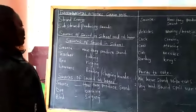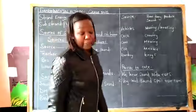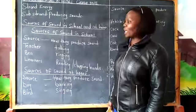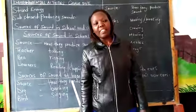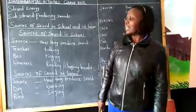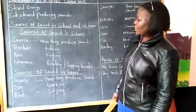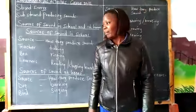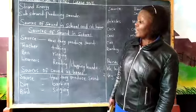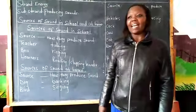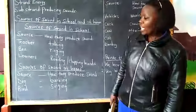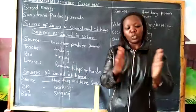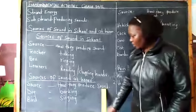In our school we have so many sources of sound. The first one is a teacher — when the teacher is talking and teaching, that is producing sound. We also have a bell; when the bell is ringing, it produces sound. Even when the learners are reading, they produce sound. Even when they are clapping hands, sound is produced.